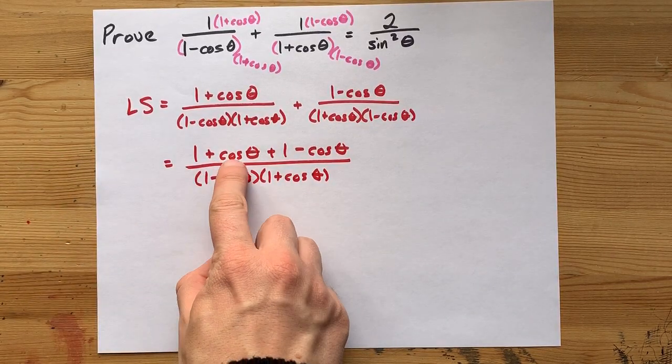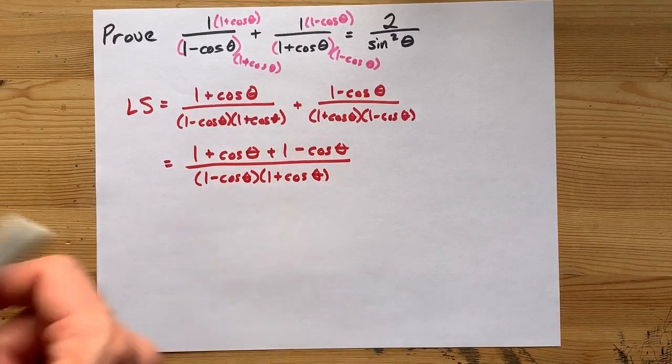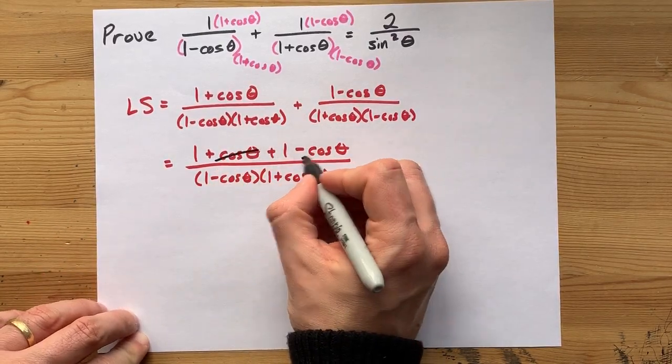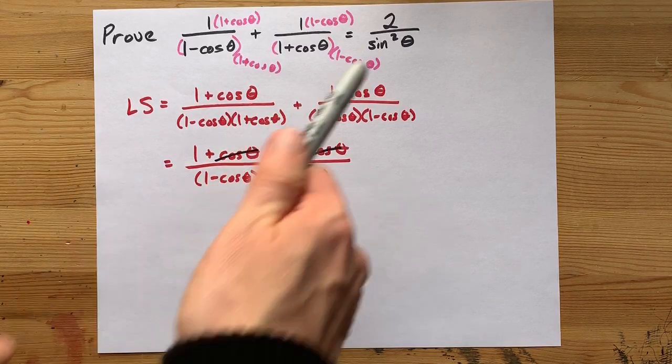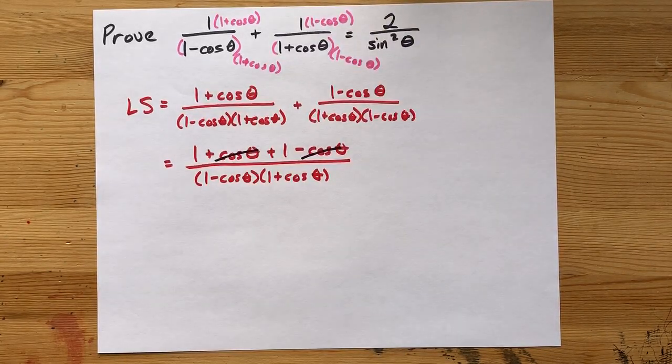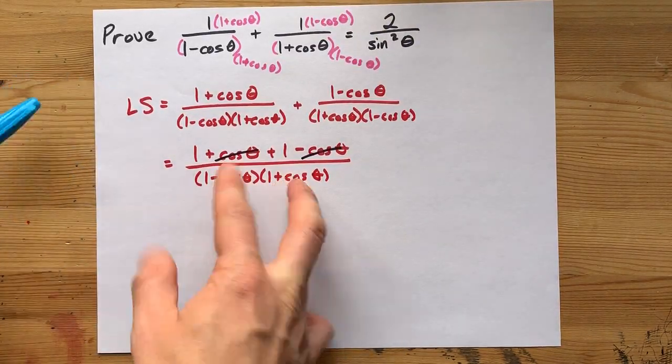We have a plus cos and a minus cos both on top. 1 plus 1 is 2. That's where the 2 on top is going to come from. But this is going to need to be cleaned up as well.